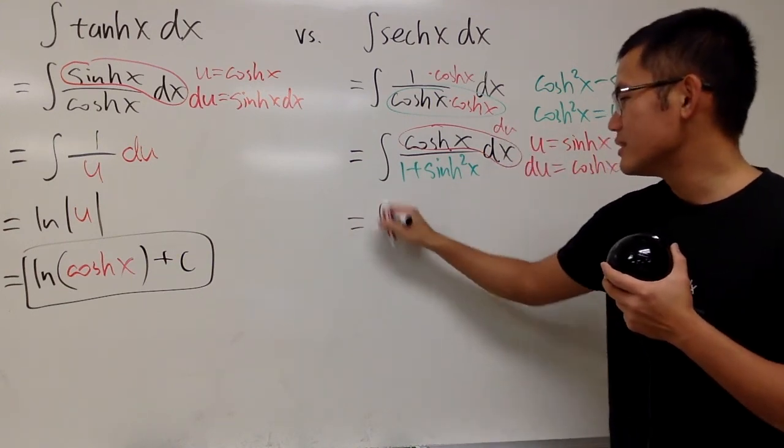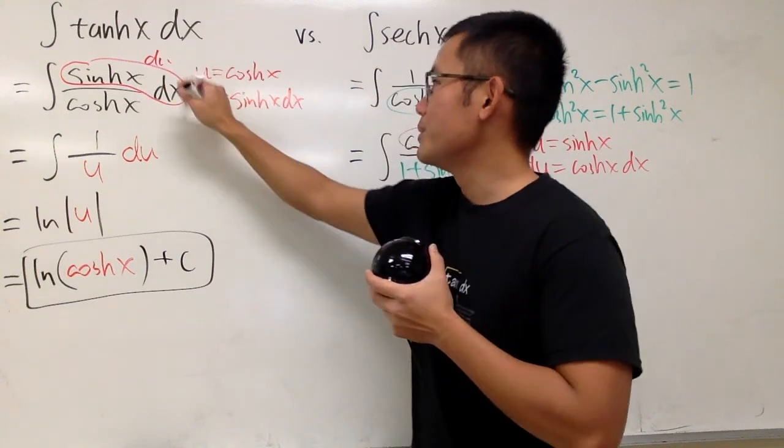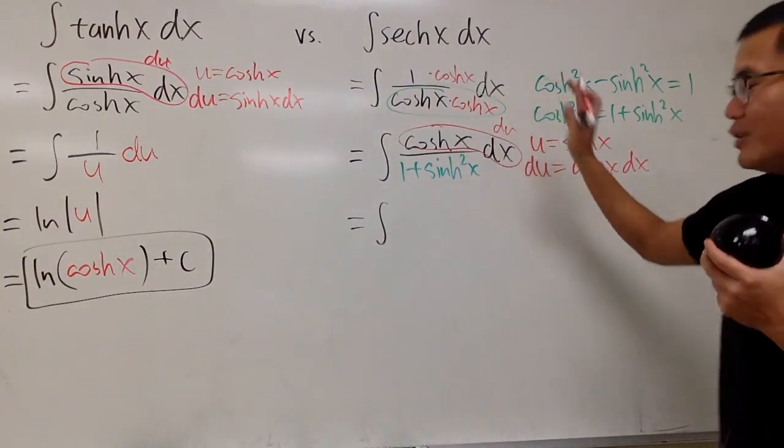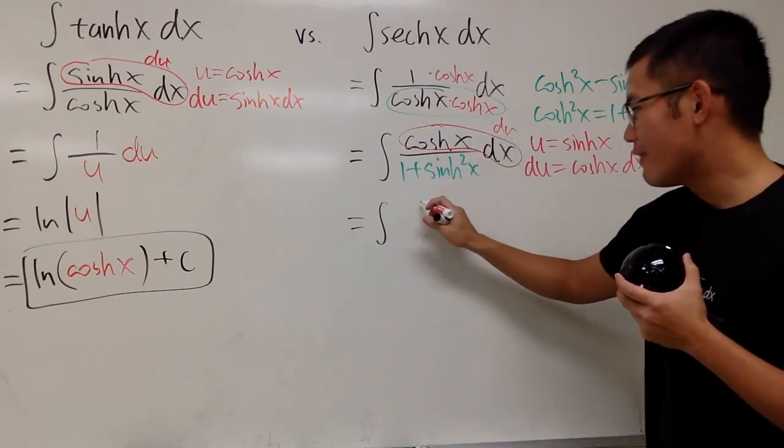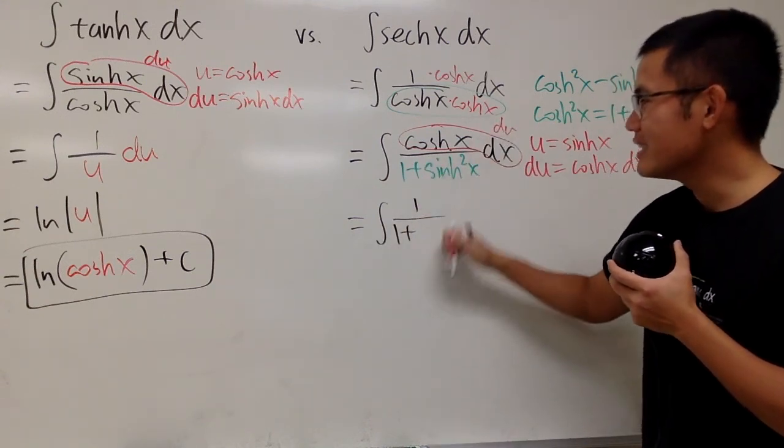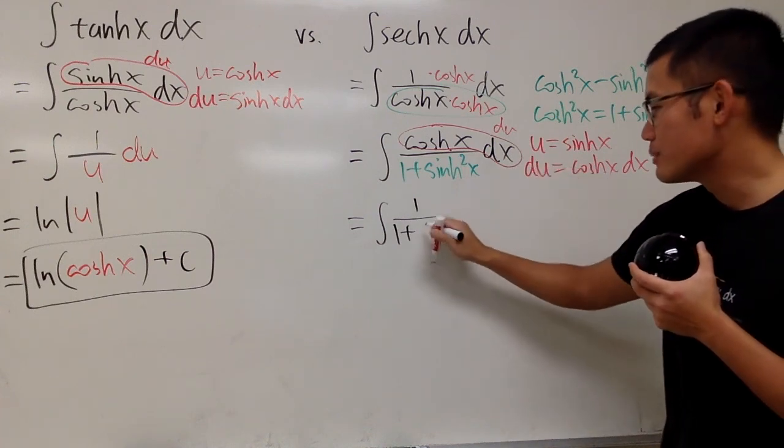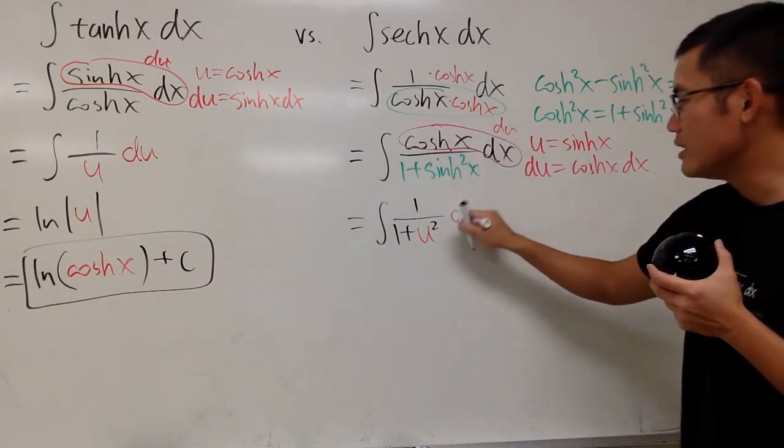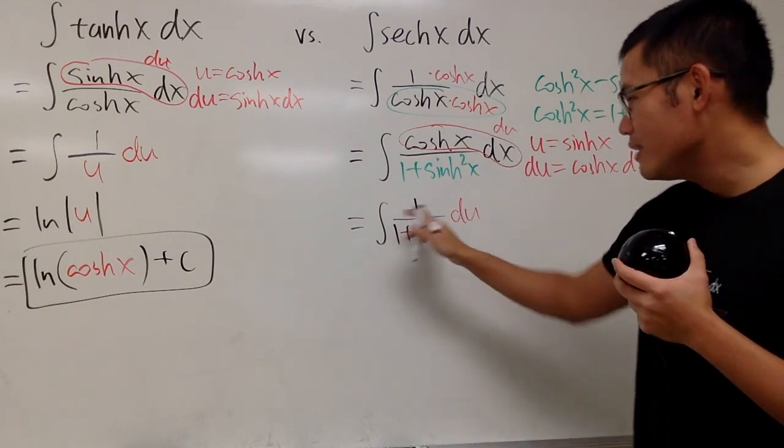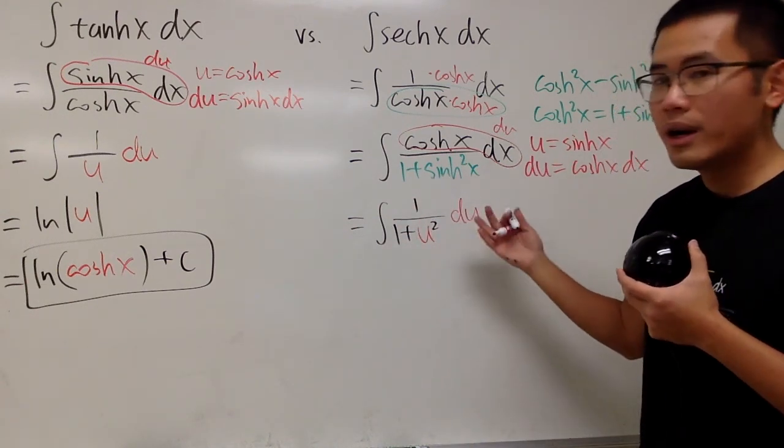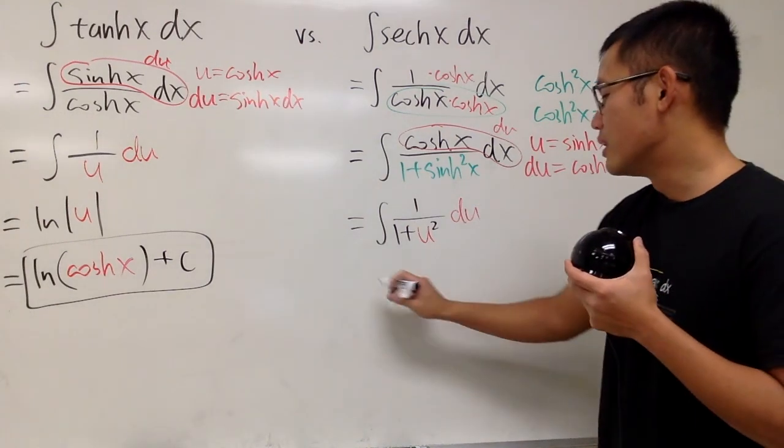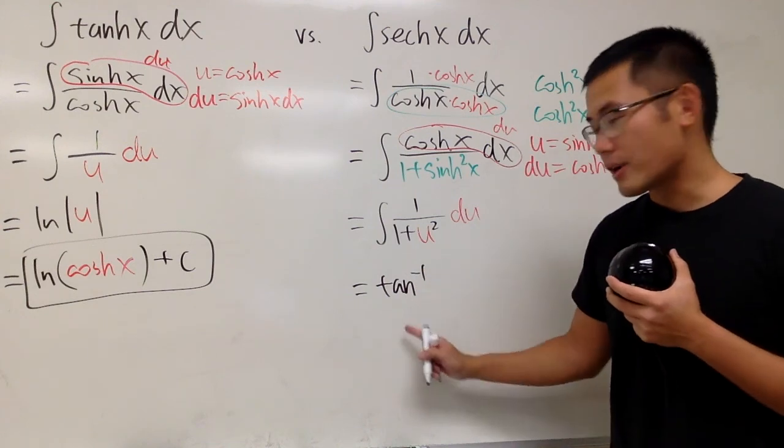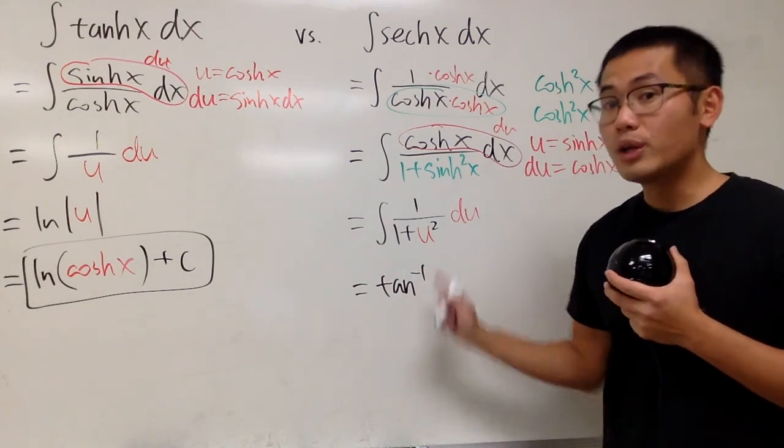So now, this is the integral. I figure I should also put the du right here just to be consistent. But anyway, this right here is the du. I'll put it on the side. And here we have 1 on the top over 1 plus sinh is our u. So I'll just put down u and then square that. And then all this is the du. Now, when we integrate 1 over 1 plus u squared in the u world, this right here gives us the inverse tangent. Notice, this is the original version. The inverse tangent. The regular version.